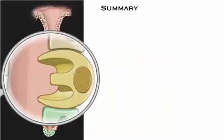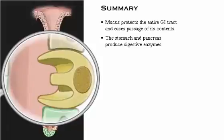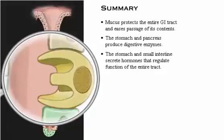Here's a summary of what we've covered. Mucus protects the entire GI tract and eases passage of its contents. The stomach and pancreas produce digestive enzymes. The stomach and small intestine secrete hormones that regulate function of the entire tract.